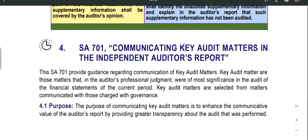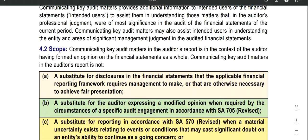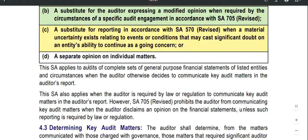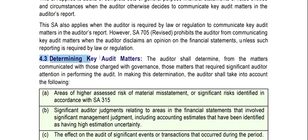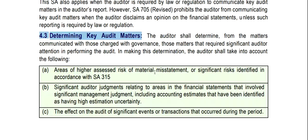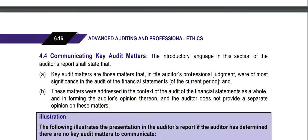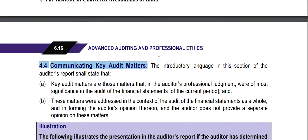SA-701 covers four main parts: first, the Purpose; second, the Scope; third, Determining Key Audit Matters — how to identify them; and fourth, Communicating Key Audit Matters. These four parts form the structure of this standard.